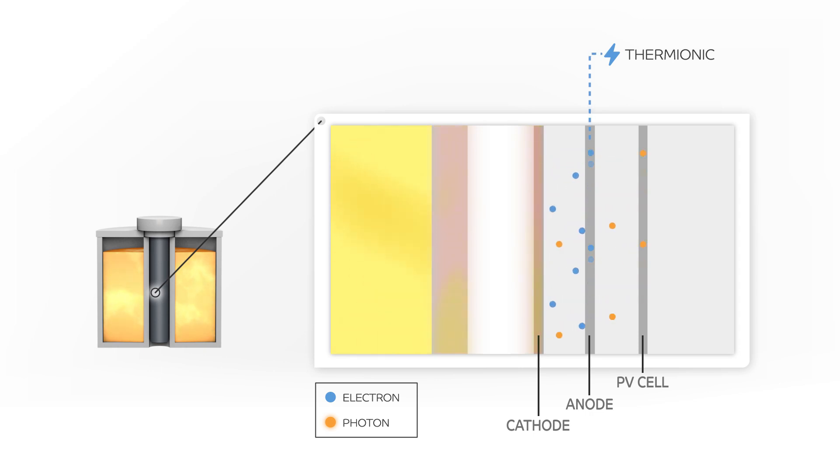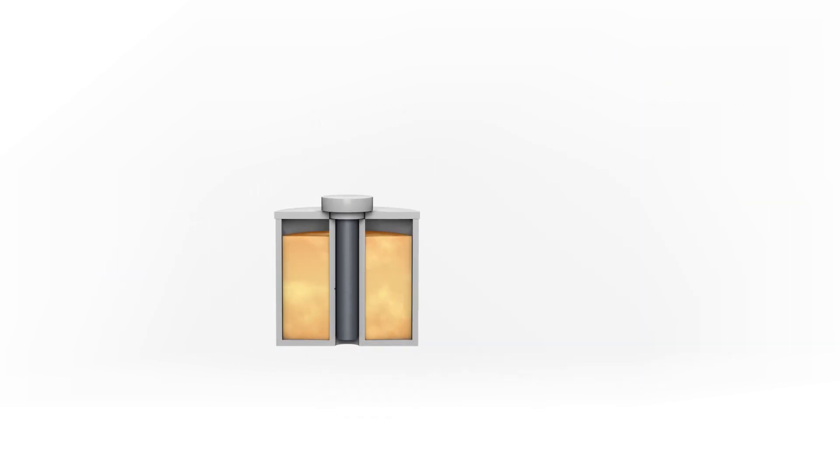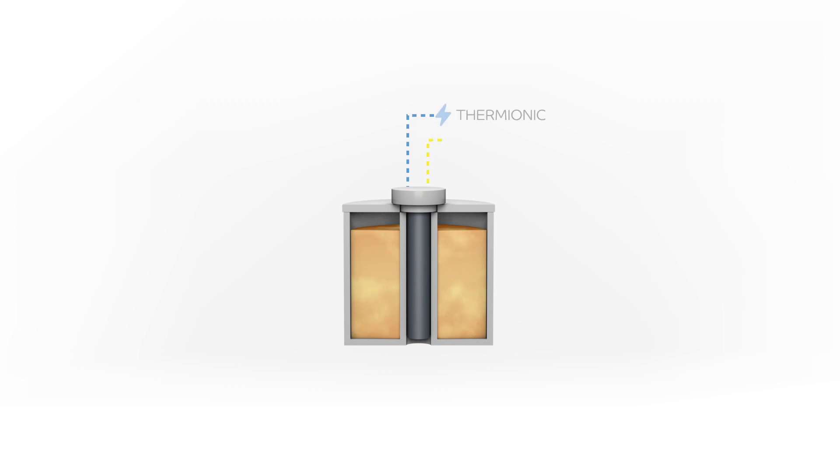The photons pass through the anode and are absorbed in an infrared-sensitive photovoltaic cell, which produces additional electricity. Both thermionic and photovoltaic outputs are then combined and contribute to the final electricity supply.